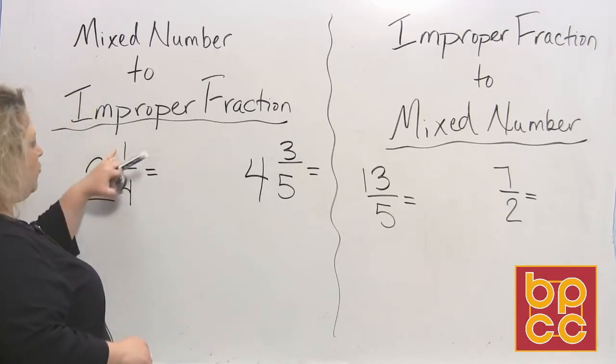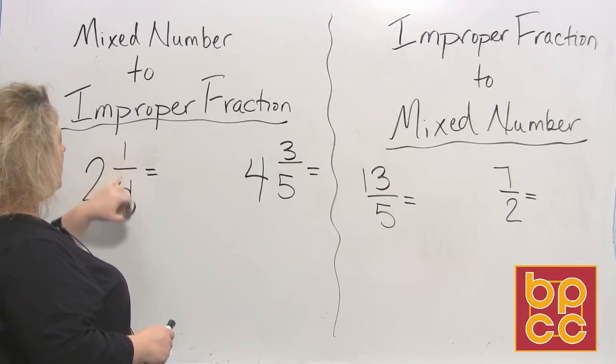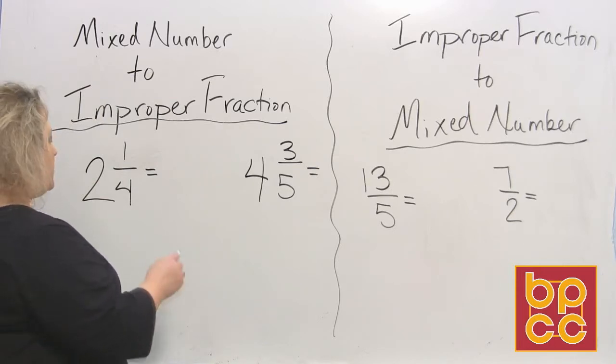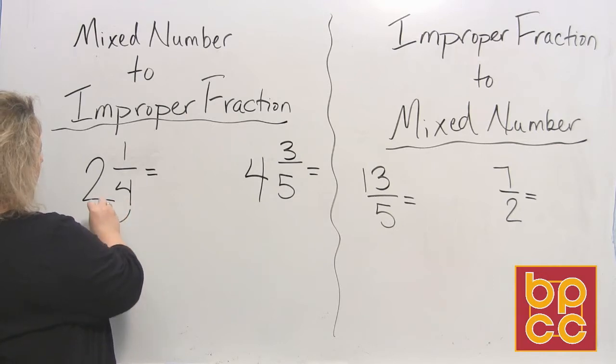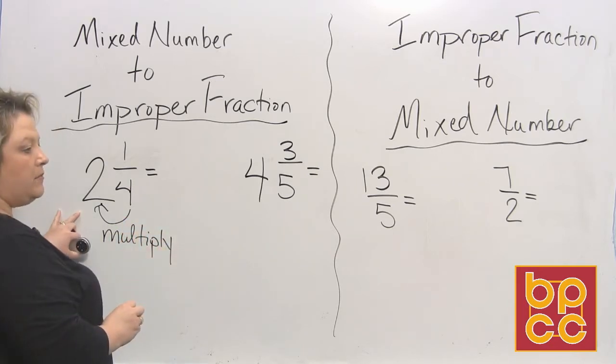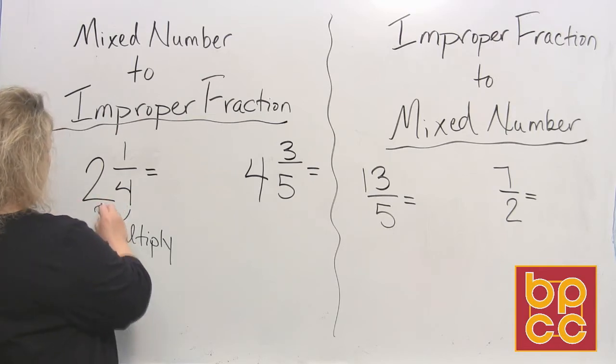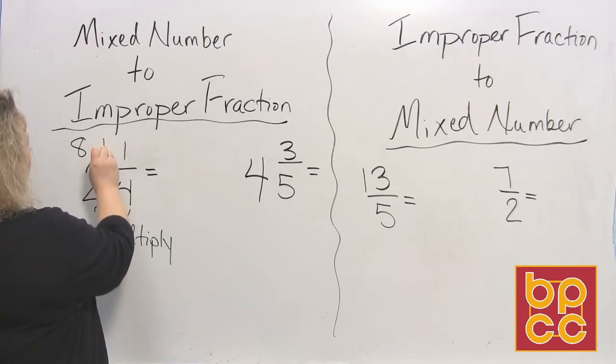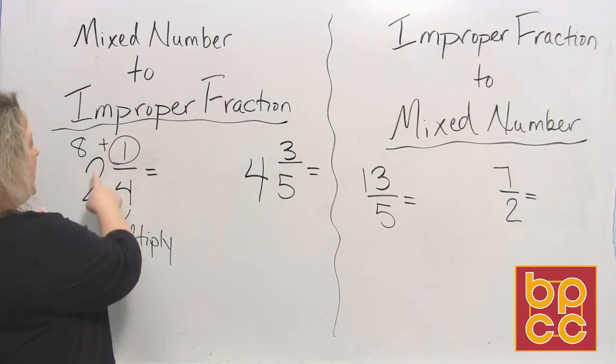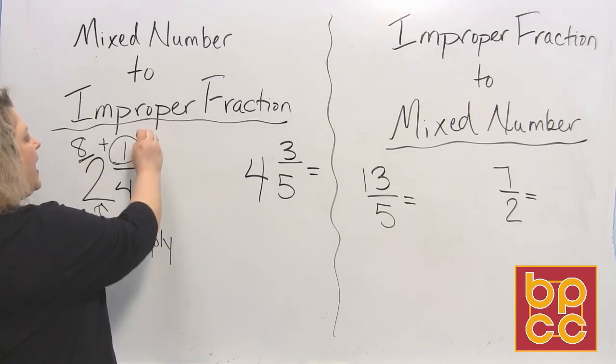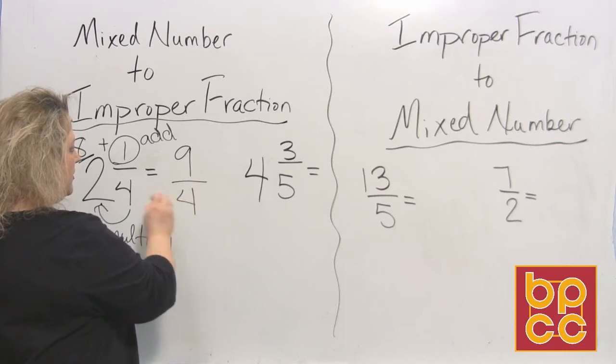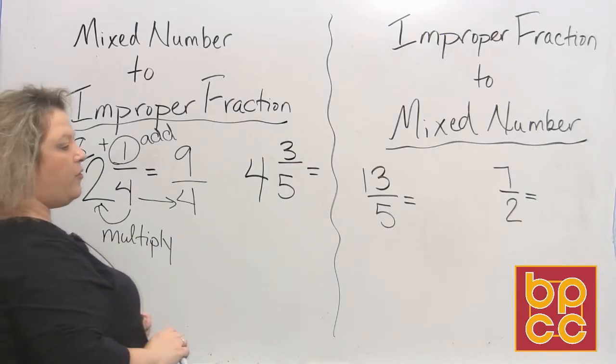So the first piece that we have is two and one fourth. That means two whole pieces plus one out of four of another. So to change this mixed number into an improper fraction, there are a couple of things that we do. The first step that we do is to take our denominator and we are going to multiply it to the whole number. So we multiply the denominator to the whole number, which would make eight. And then we add the numerator. So you multiply the denominator by the whole number and that makes eight. And then you take that and you add the numerator, which makes nine. So that would be nine pieces out of four because your denominator just slides over nine pieces out of four.